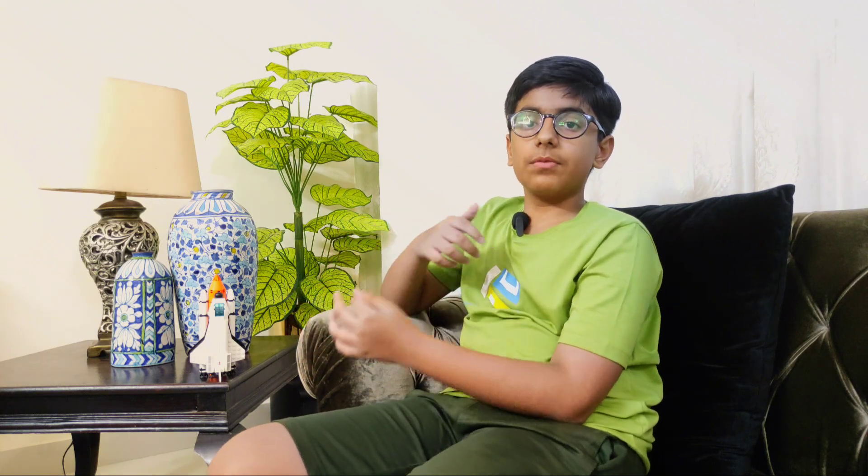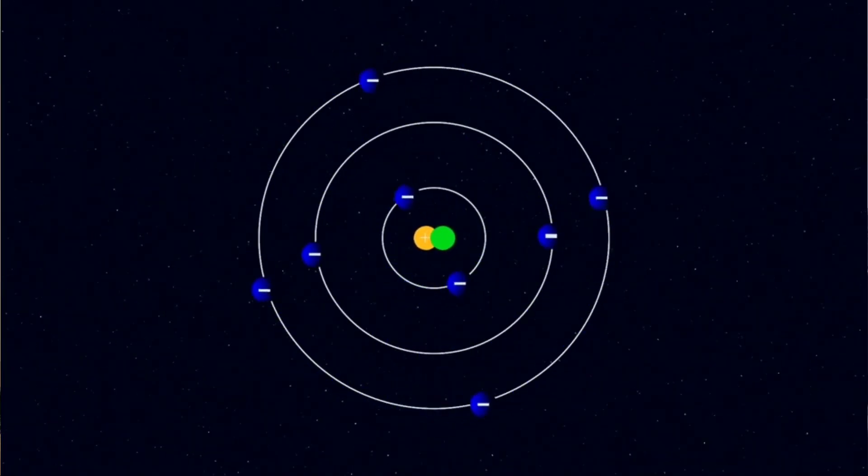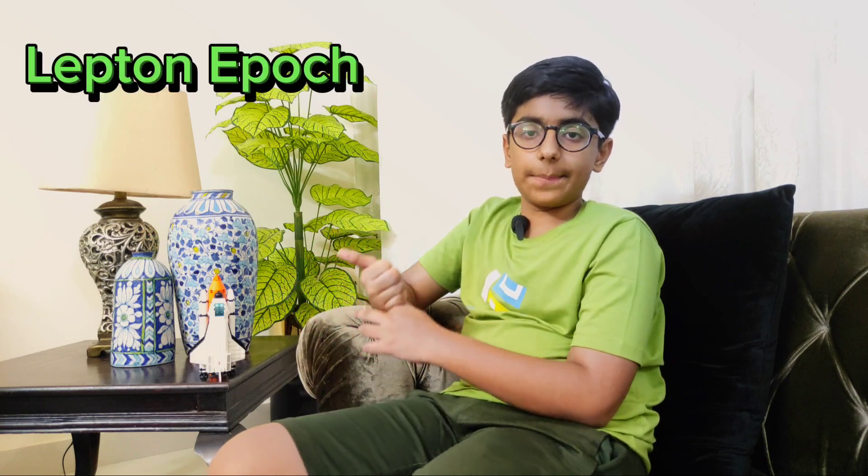After this came the quark epoch, in which quarks started to form but could not combine to make subatomic particles because the universe was still too hot. Then came the hadron epoch, in which the universe had cooled down enough for quarks to finally bind together to form the subatomic particles: protons, neutrons, and electrons.